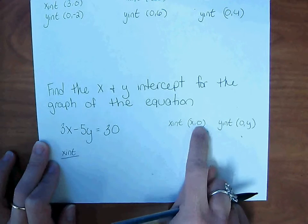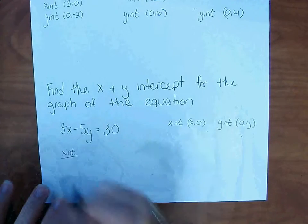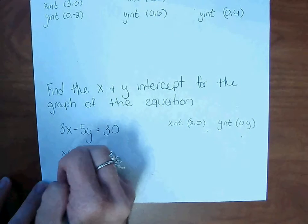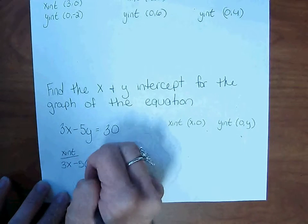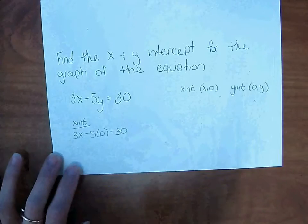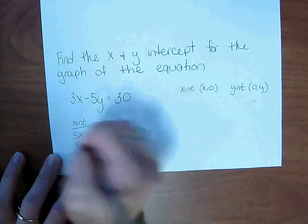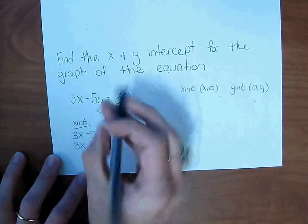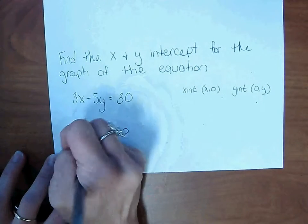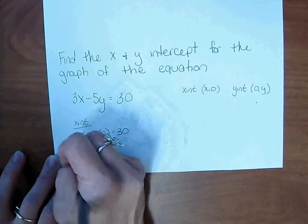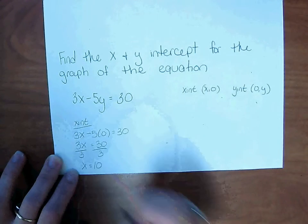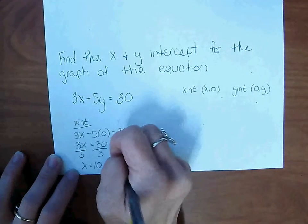So we're going to plug in a 0 where we see y. So 3x minus 5 times 0 equals 30. Work this out. 3x negative 5 times 0 is 0 equals 30. Solve for x. So the x-intercept is 10. And we would write that as an ordered pair, 10, 0.